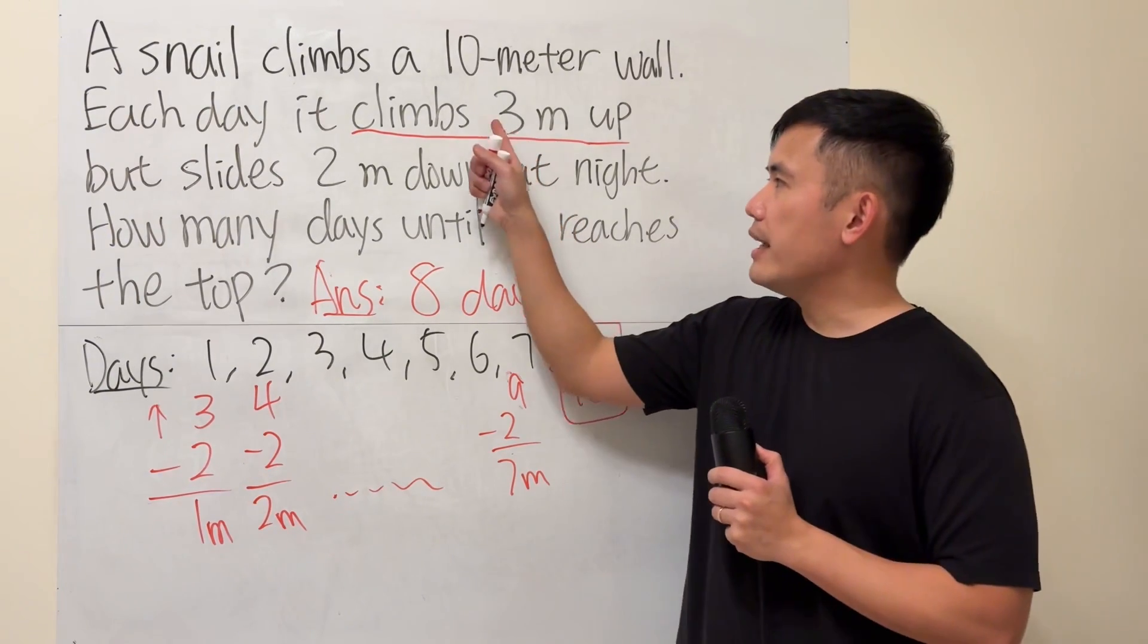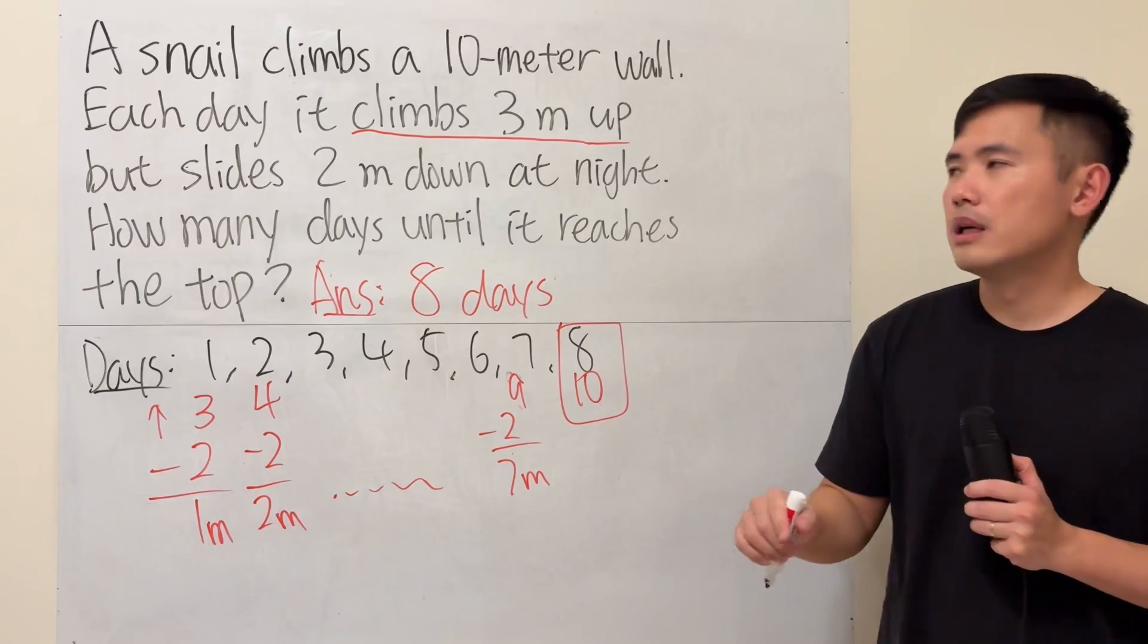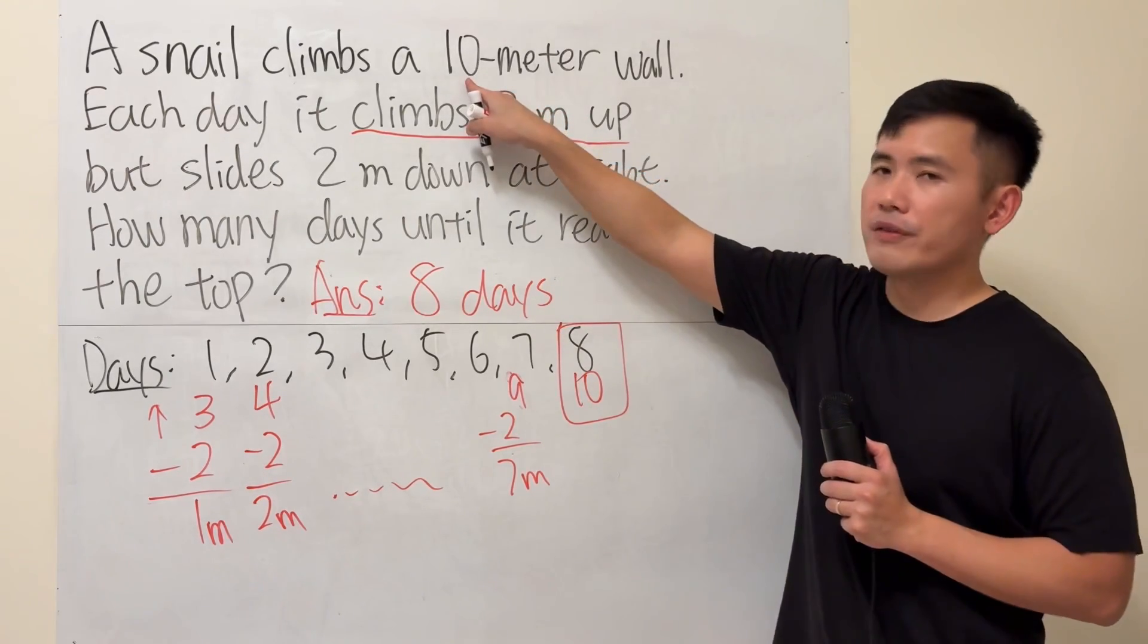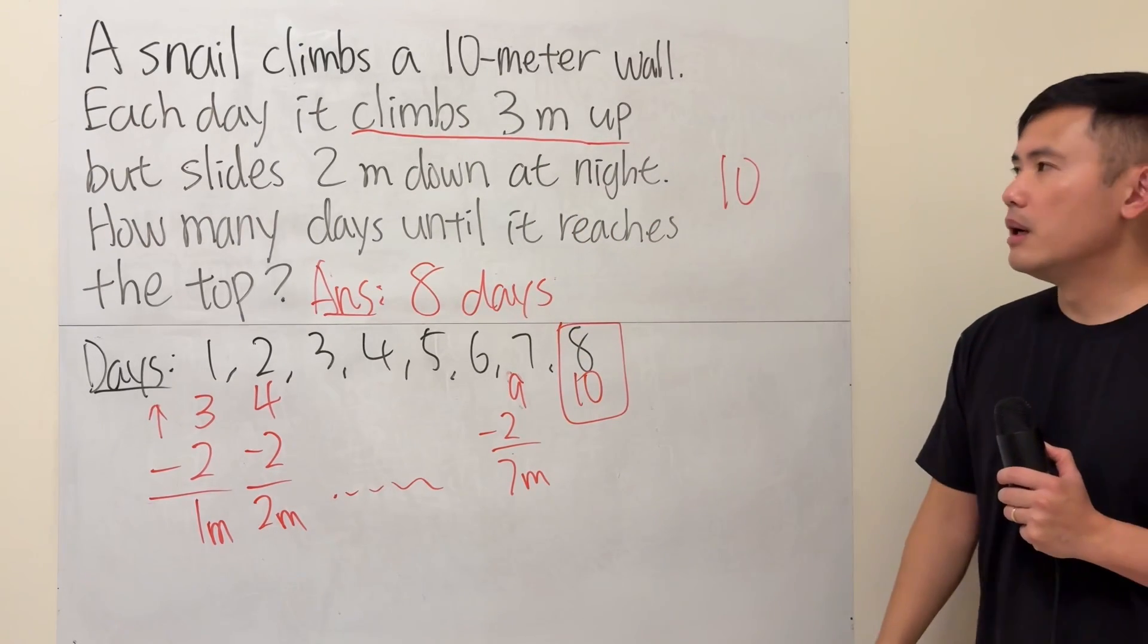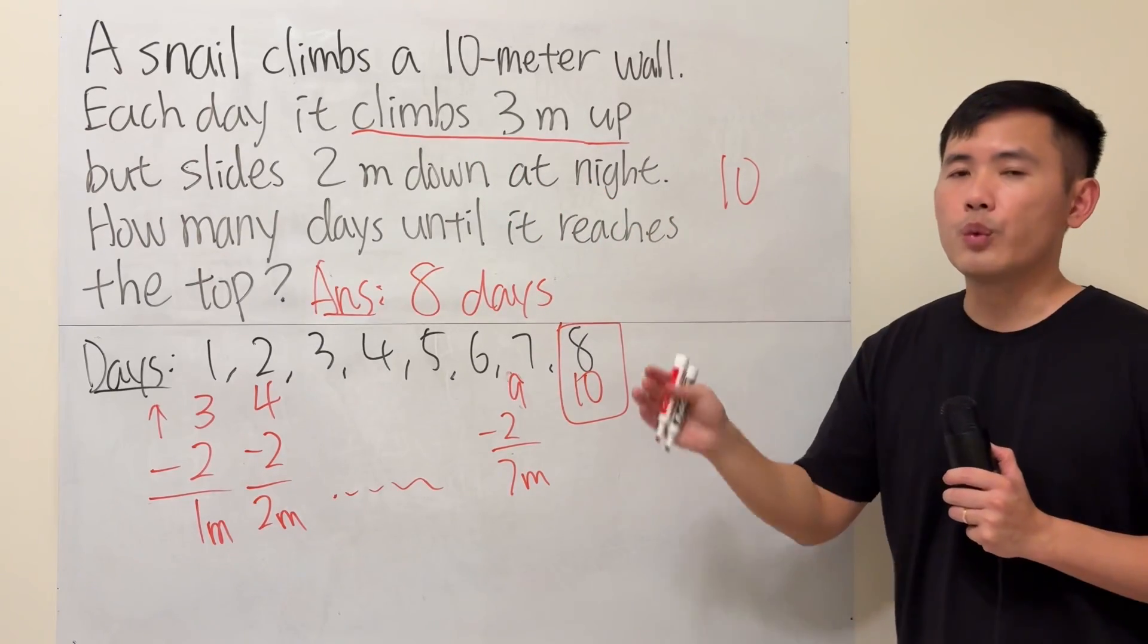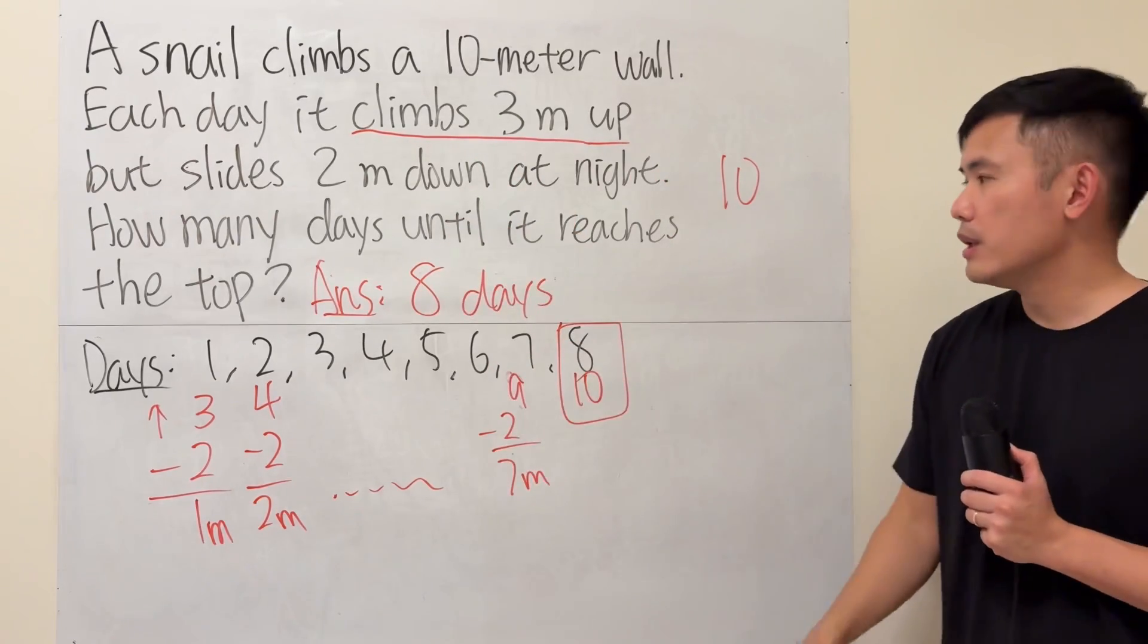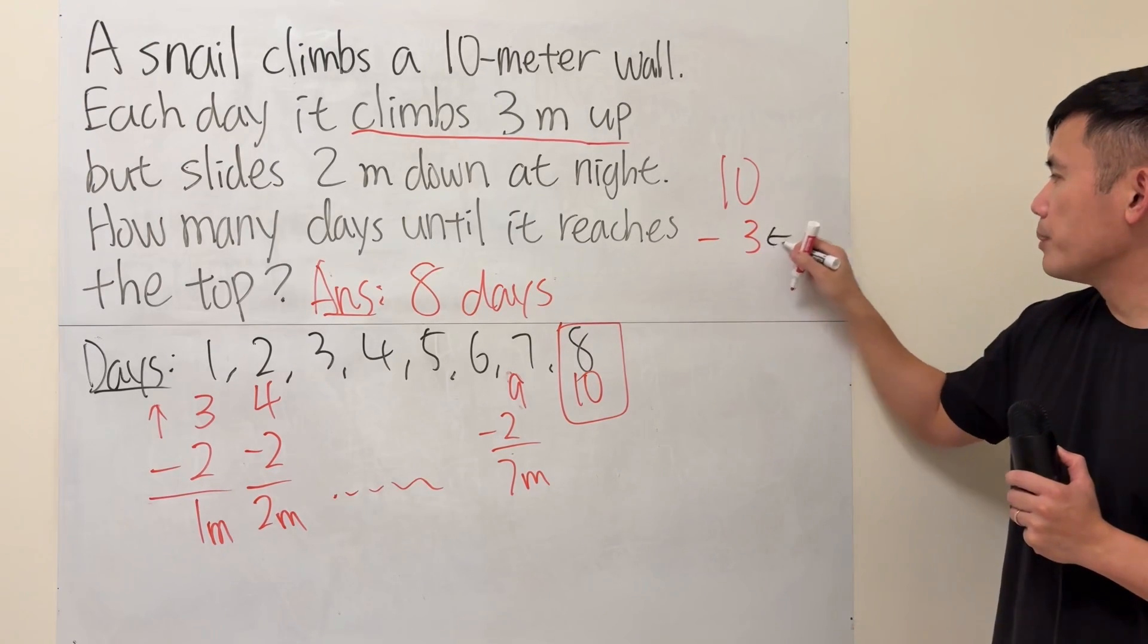Alright. Here's the deal. Each day, 3 minus 2, we are making 1 meter progress. And we have to get to a total of 10. So 10 meter progress. But remember, I'm going to make sure my last day it goes up by 3 without sliding down at 2. So I'm going to minus 3. And this right here will be 1 day.